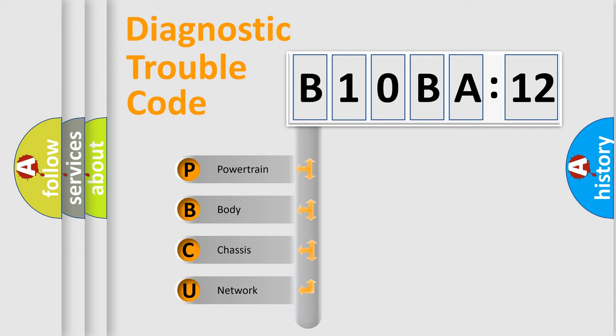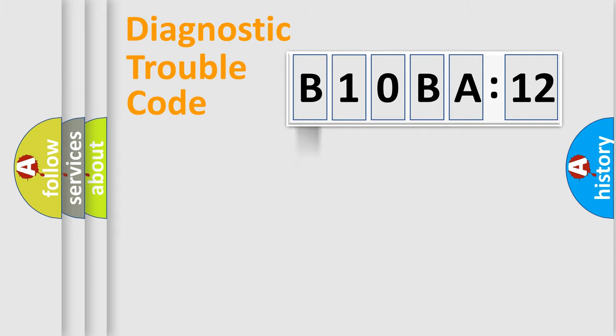We divide the electric system of automobile into four basic units: Powertrain, Body, Chassis, Network. This distribution is defined in the first character code.